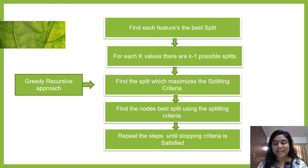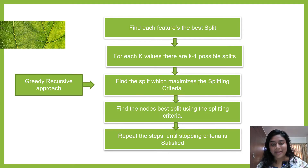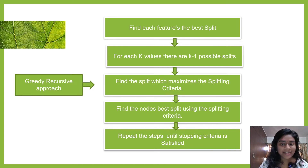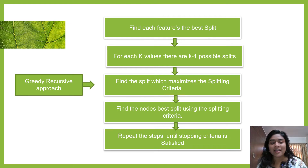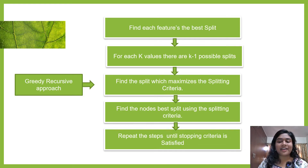So you first find the features, then you find the best split, then you find the nodes using the Gini and find the best split, and repeat these steps till the stopping criteria is satisfied. It is greedy because it uses the best, and recursive because you repeat the steps till the stopping criteria is satisfied.